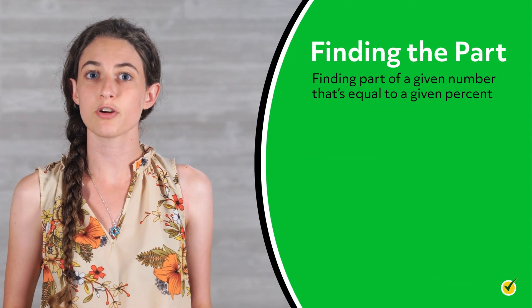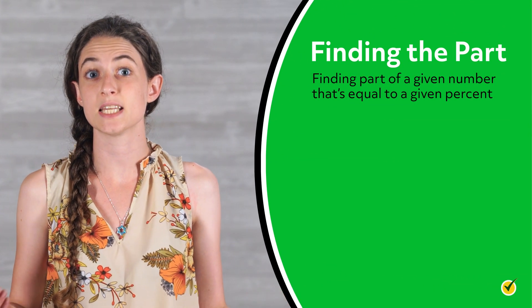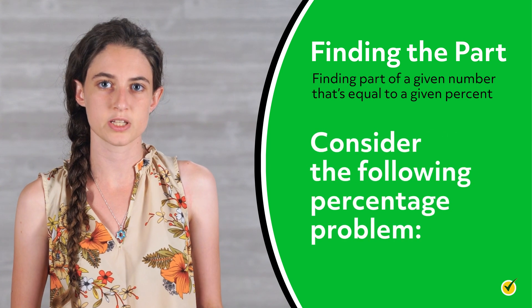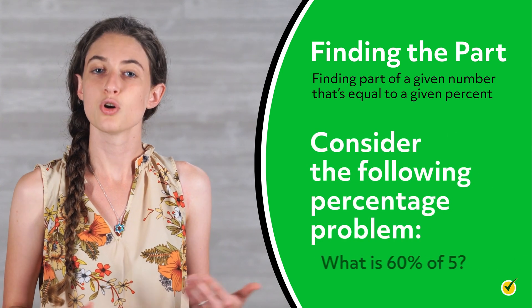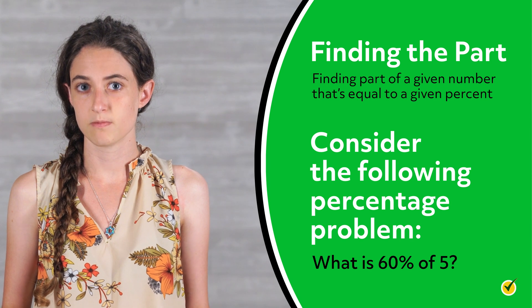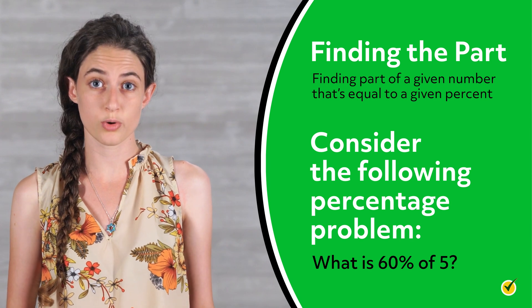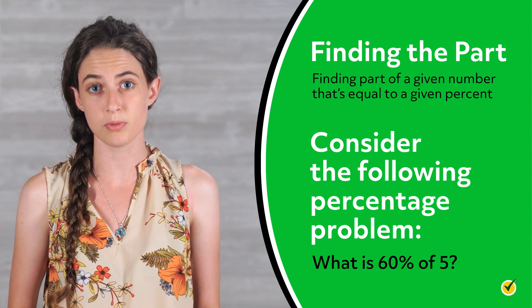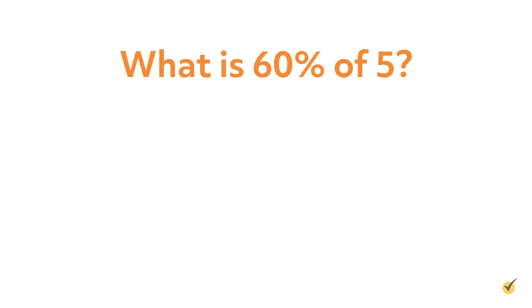Let's start with the first problem type, finding the part. The first problem type involves finding part of a given number that's equal to a given percent. Consider the following percentage problem: What is 60% of 5? To answer this question, we need to understand the information we are given in the problem. Let's look at each part of the word problem and translate it into an algebraic equation.